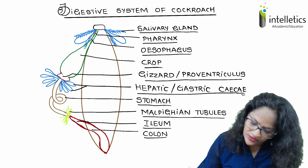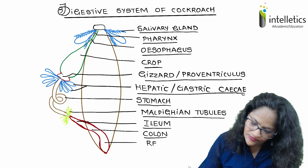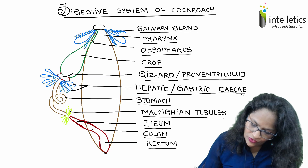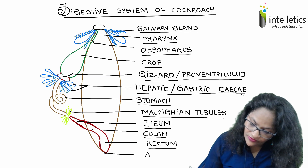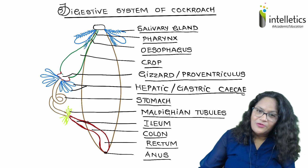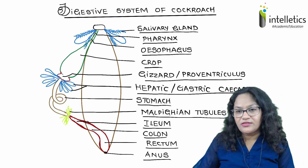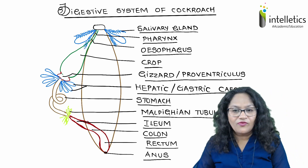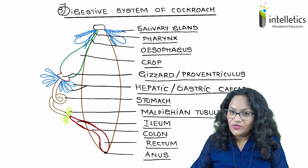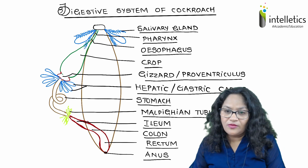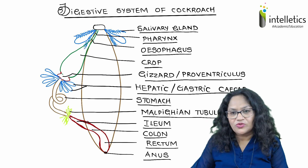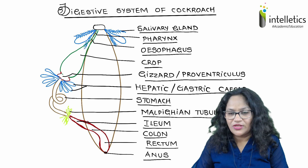This is the colon. This is the rectum, which opens outside via the anus. So this is how you can draw the digestive system of the cockroach. In the next video, I shall be discussing the digestive system of cockroach in detail.